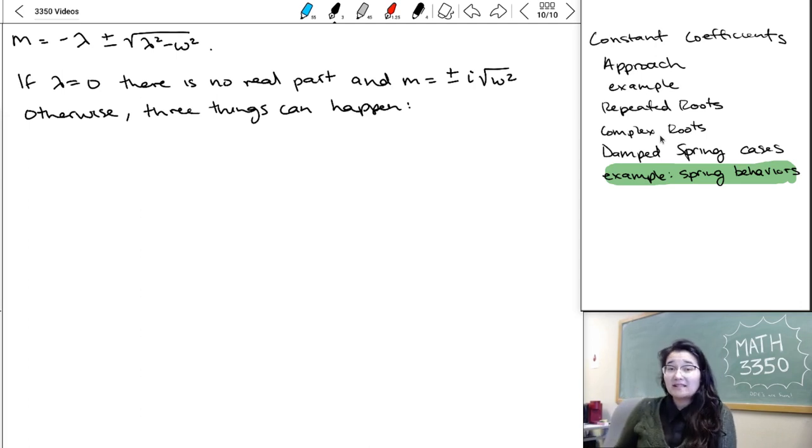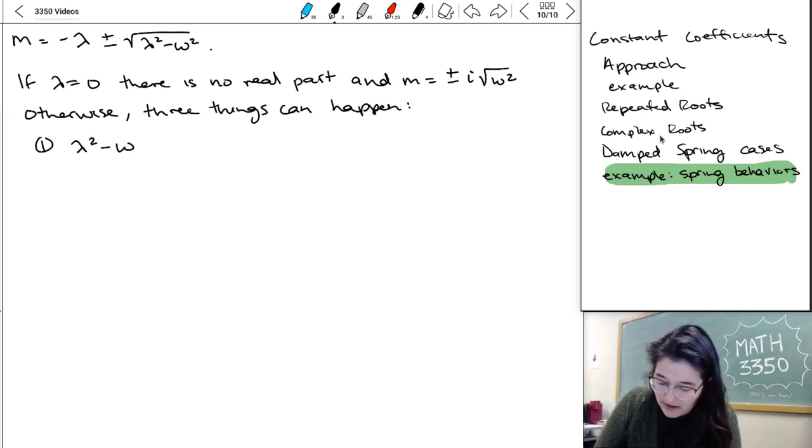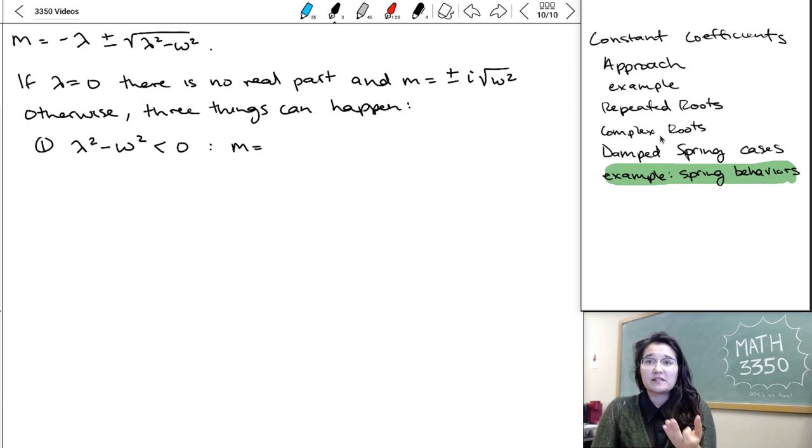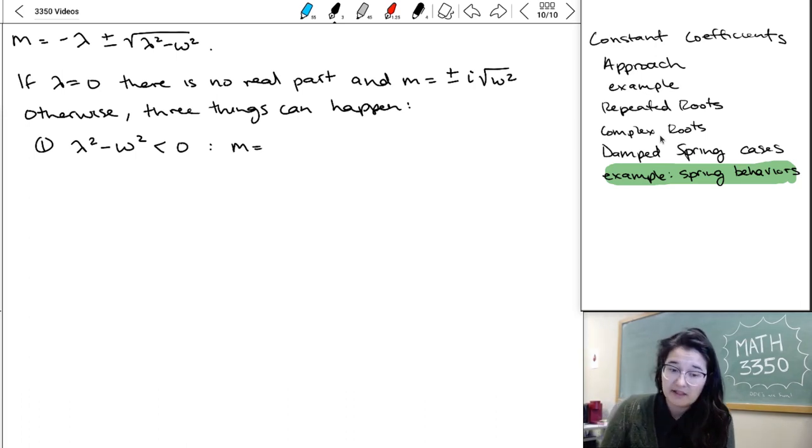If lambda is non-zero, then there are three different cases to consider. And they're all going to be related to what happens inside that square root. Does it give me imaginary numbers? So in the case where lambda squared minus omega squared might be less than zero, I'm going to get that the thing inside the square root is negative.